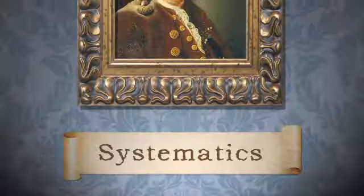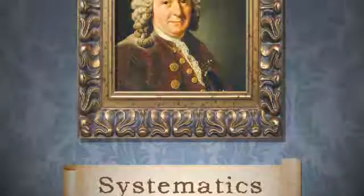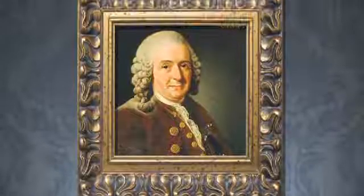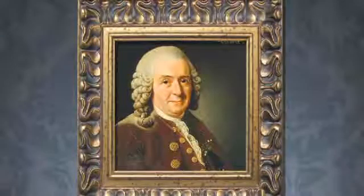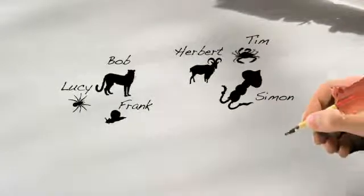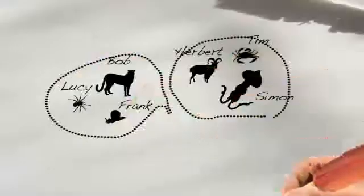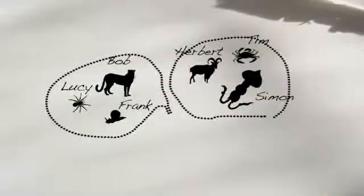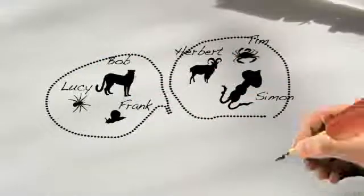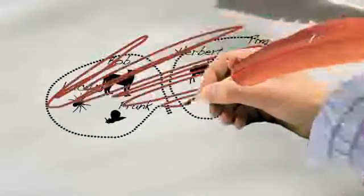Giving names to plants and animals started a long time ago with a guy named Linnaeus. In the 1700s, this Swedish doctor decided he'd give plants and animals names and then group the species together based on their similarity to each other. But he didn't just name things randomly — there were rules to keep things organized.